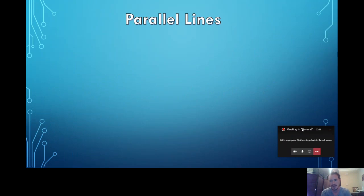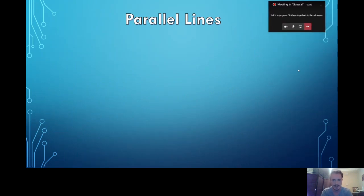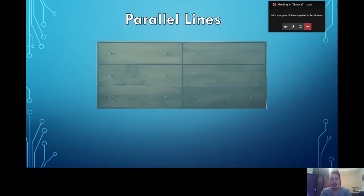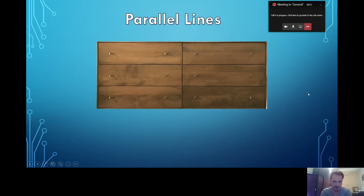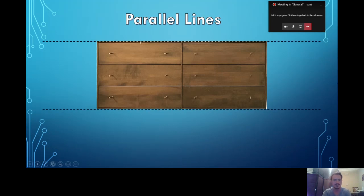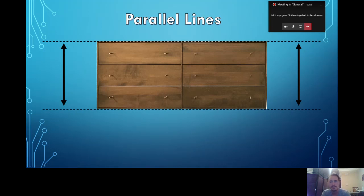First, I want to touch on parallel lines — I know you learned a little bit about those on Wednesday. If you look at this chest of drawers, I can see two pairs of parallel lines. Can you find where they are? Here's one pair of parallel lines — they go right across the top and right across the bottom. We know these are parallel lines because they stay the same distance apart. The side lines also stay the same distance apart.